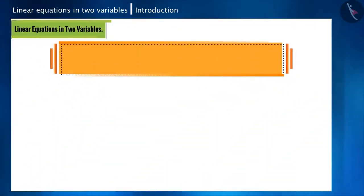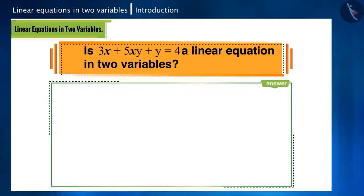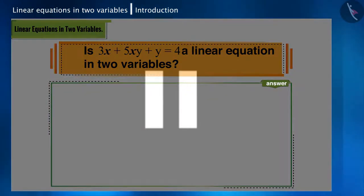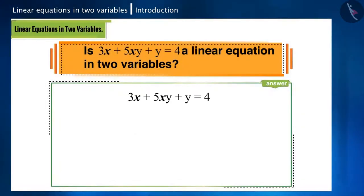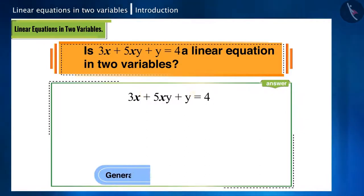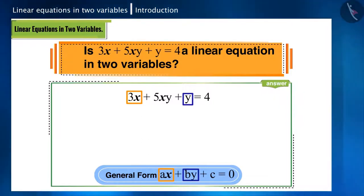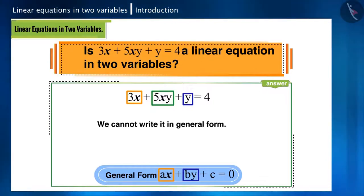Is 3x + 5xy + y = 4 a linear equation in two variables? There are two variables x and y in our equation, and the maximum power of both is also one. But if we compare it with the general form of a linear equation in two variables, it has a term in x and a term in y, but there is also an xy term in the given equation, because of which we cannot write it in its general form.